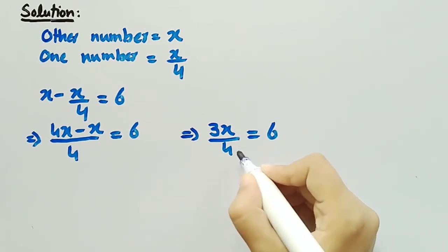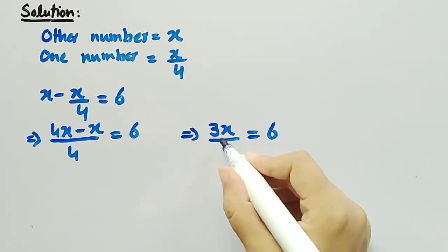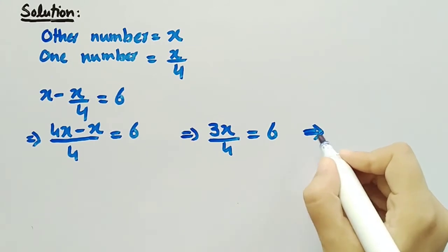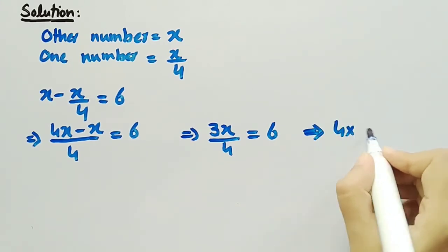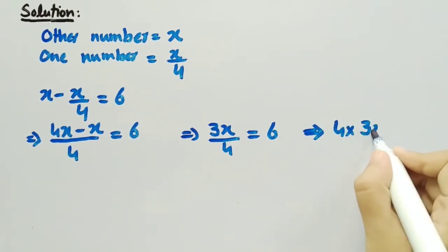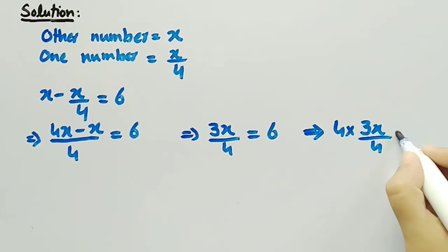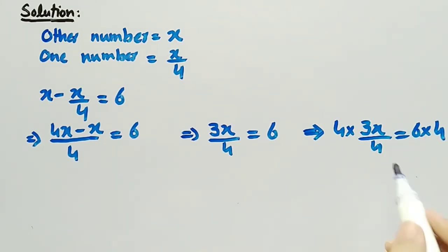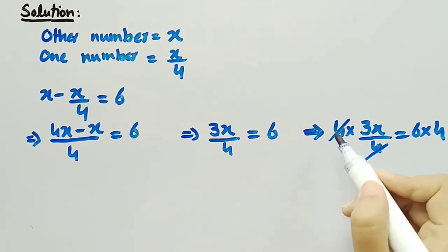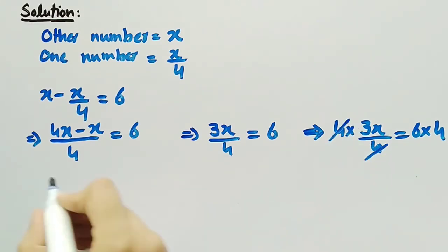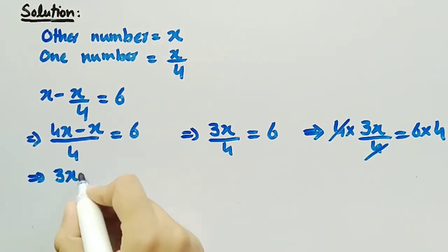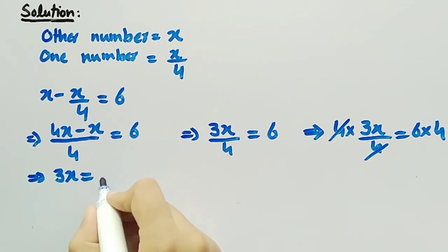Now, multiplying both sides by 4, we get 4 multiplied by 3x by 4 equal to 6 multiplied by 4. The 4 will be cancelled out and we are left with 3x equal to 24.